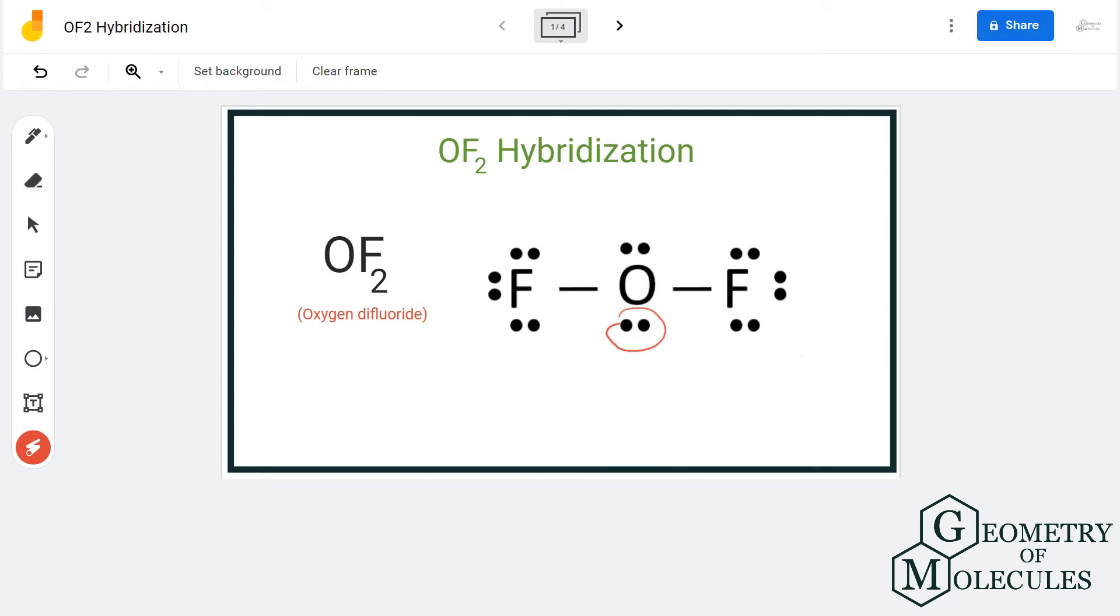If you look at the total number of bonding pairs and lone pairs, the total comes to four, and hence it needs to form four hybrid orbitals to accommodate all these electrons.